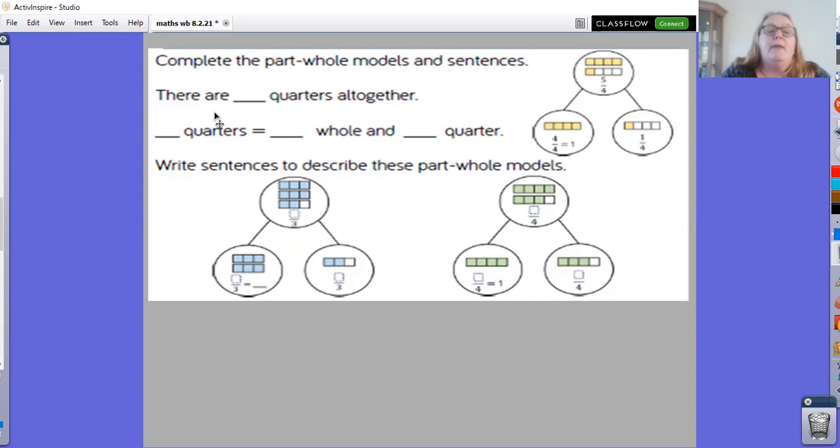So you'll put there are five quarters all together. Five quarters equals one whole and one quarter.